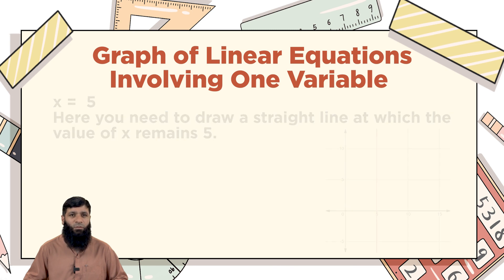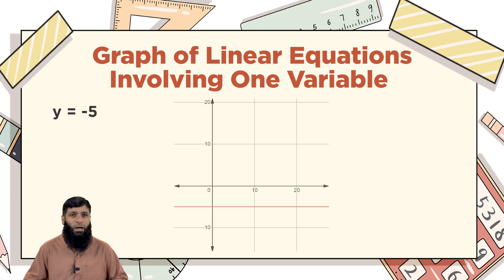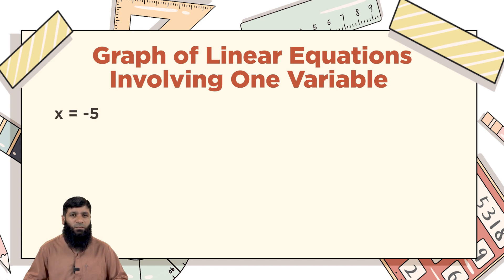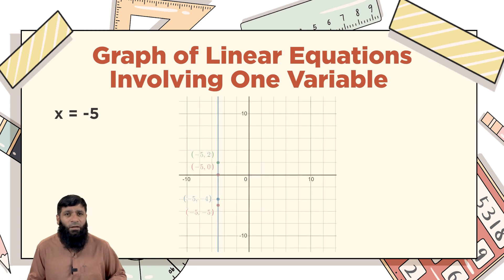Now let's look at y = -5. The graph of this equation is a horizontal line where the value of y remains -5 throughout. You can see that horizontal line and the value of y stays -5. Similarly, for the straight line x = -5, we have plotted four coordinates: (-5, 2), (-5, 0), (-5, 4), and we can see that throughout all these coordinates the x-coordinate remains -5 — it is stationary and does not change.